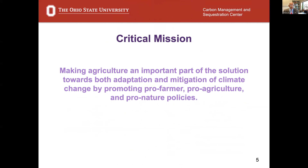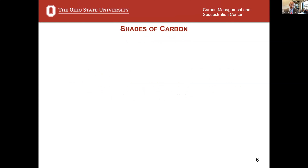Therefore, the critical mission of so-called climate smart agriculture, climate resilient agriculture, is making agriculture an important part of the solution towards both adaptation and mitigation of climate change, by promoting pro-farmer, pro-agriculture, pro-nature policies. I want to repeat the last part: promoting pro-farmer, pro-agriculture, pro-nature policies, so that agriculture is integral to any solution to mitigation and adaptation of climate change.